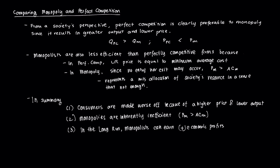Under the assumption of a linear market demand and typical U-shaped AC and MC curves, from a societal perspective, a perfectly competitive market is clearly preferred to a monopoly. That's because the total output in a perfectly competitive market, QPC, is greater than in a monopolistic market, QM. Not only that, the price charged in a perfectly competitive market is less than the price in a monopolistic market.